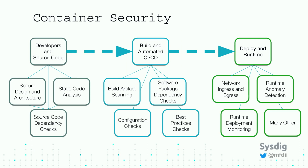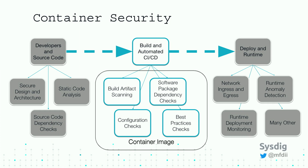On the build security side, I'm going to talk about a tool called Anchore. When you think about everything that needs to happen from a security perspective to get the container out and running, there are things around static code analysis, source code dependency checks, build artifact scanning, configuration checks, and best practice checks. This all ends up getting packaged up and put into the container image that we're going to ship out.